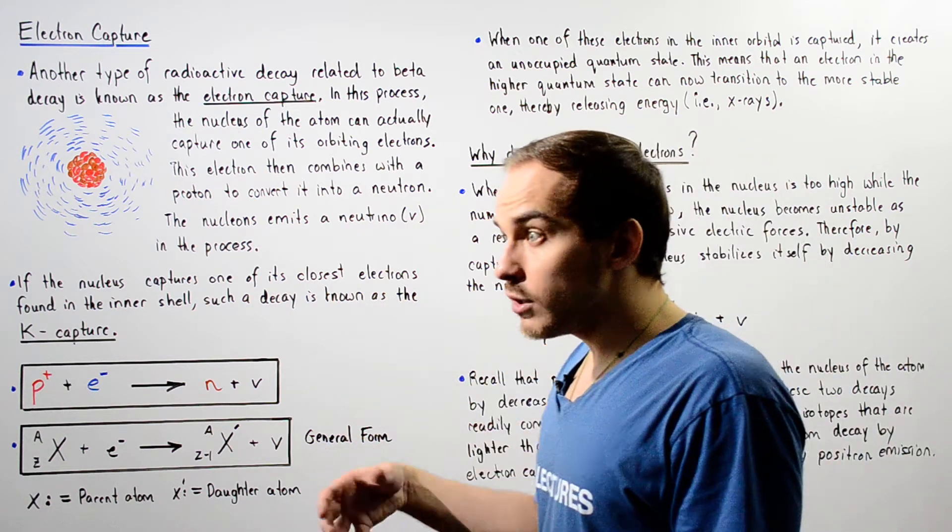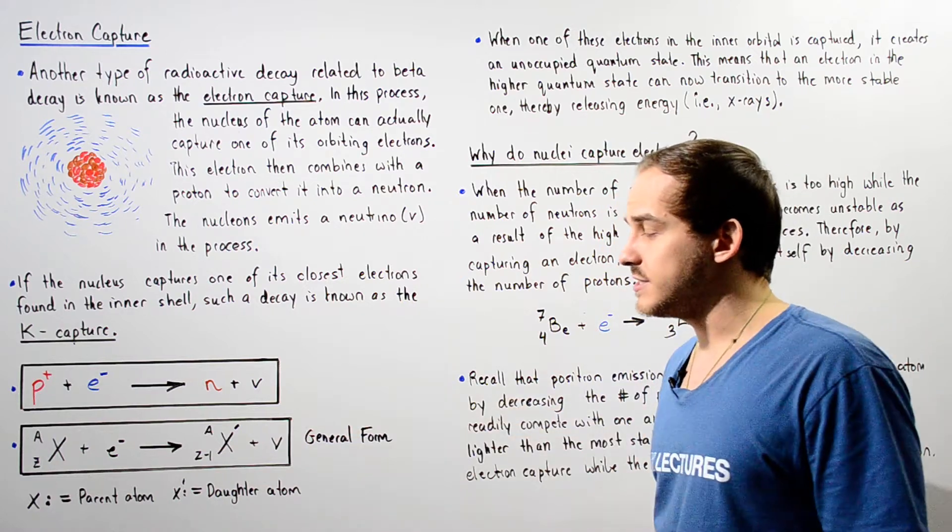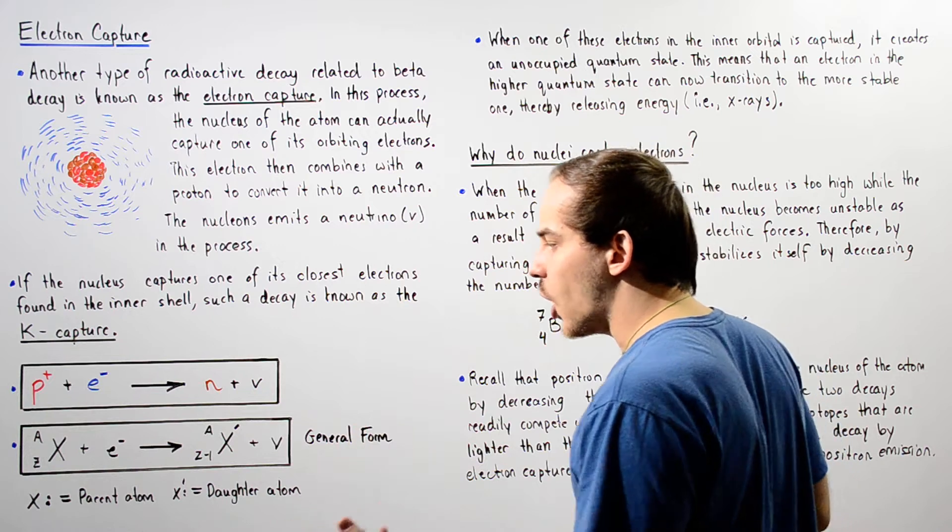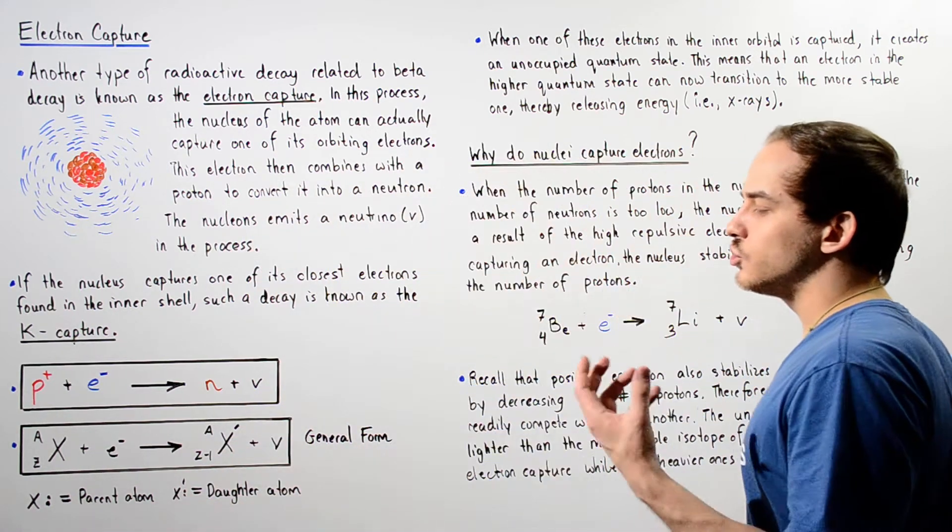And the neutron basically is created along with the emission of our neutrino particle given by V. Now the general form that describes the equation for the electron capture decay is given by this equation, where X is our unstable nucleus known as the parent atom and X prime is the more stable daughter atom.